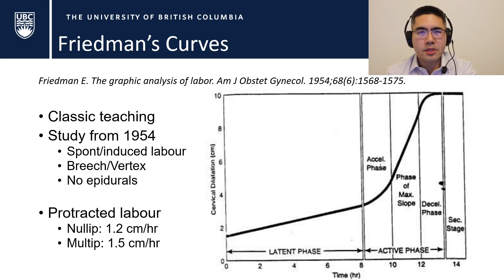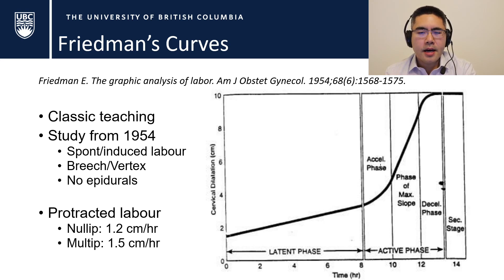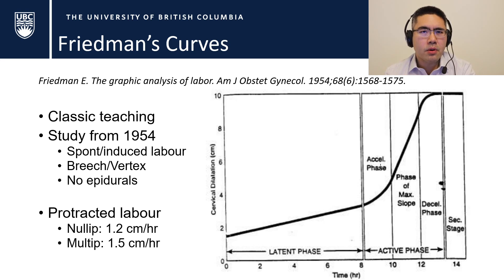Taking a step back and talking about Friedman's curves: Friedman's curves have really defined the way we manage labor and delivery for decades. Friedman published a study in 1954 that followed a whole bunch of patients who were either spontaneous or induced, breech or vertex, through labor, and what you've learned is a series of numbers in terms of how fast we expect labor to actually happen. This is a much older study, done before the advent of epidurals and certainly before the advent of evidence-based medicine.